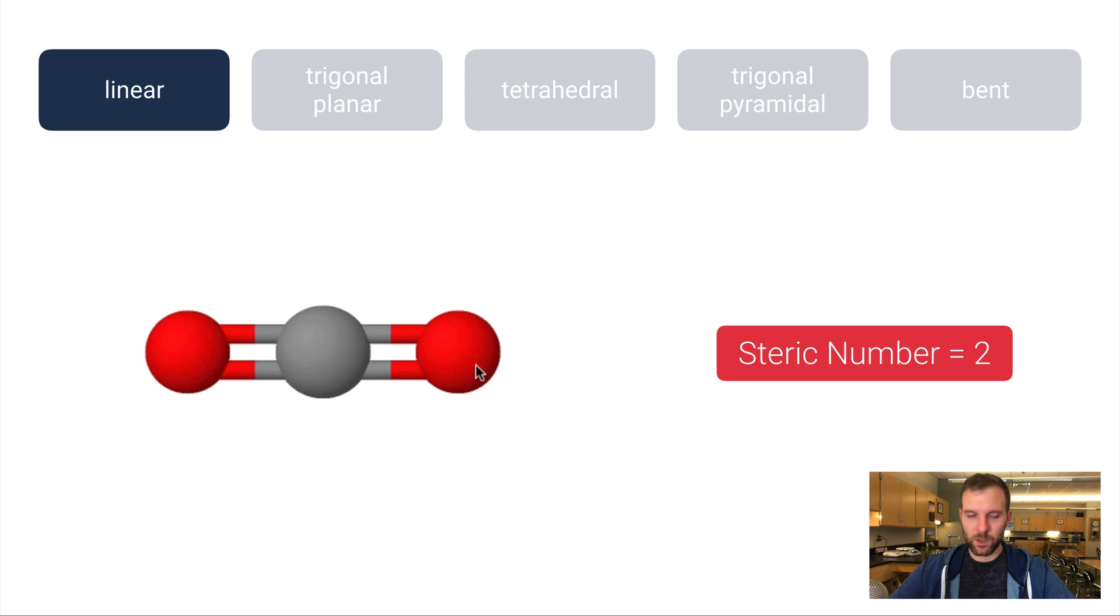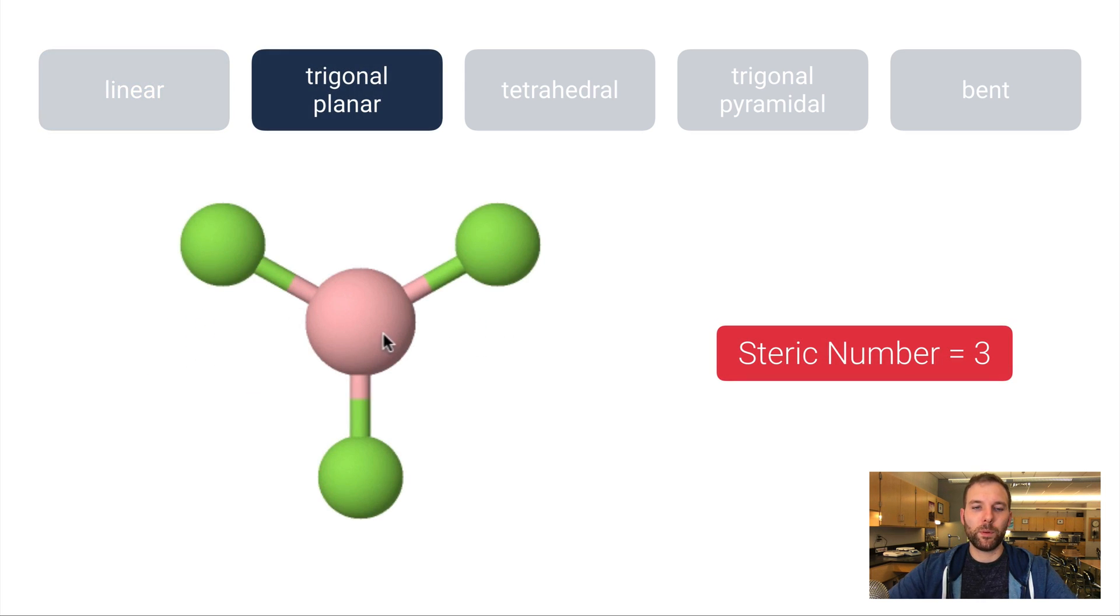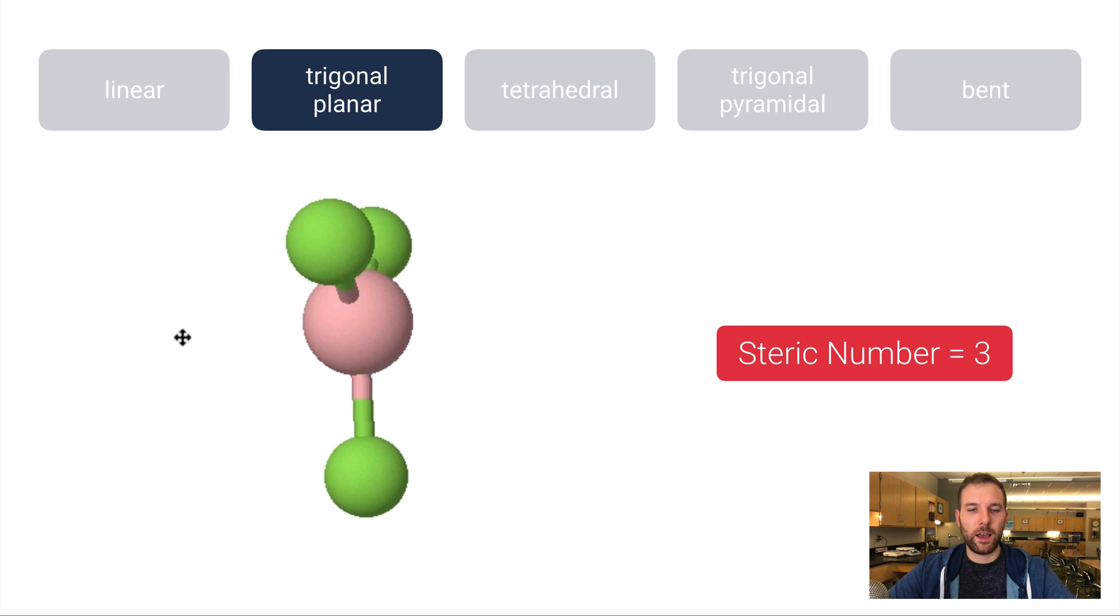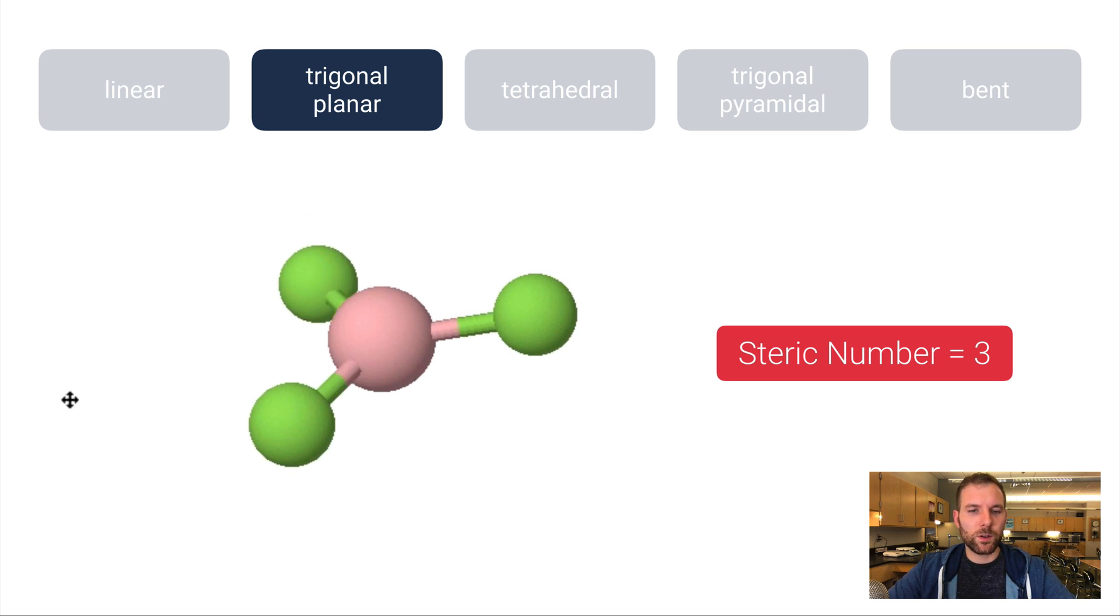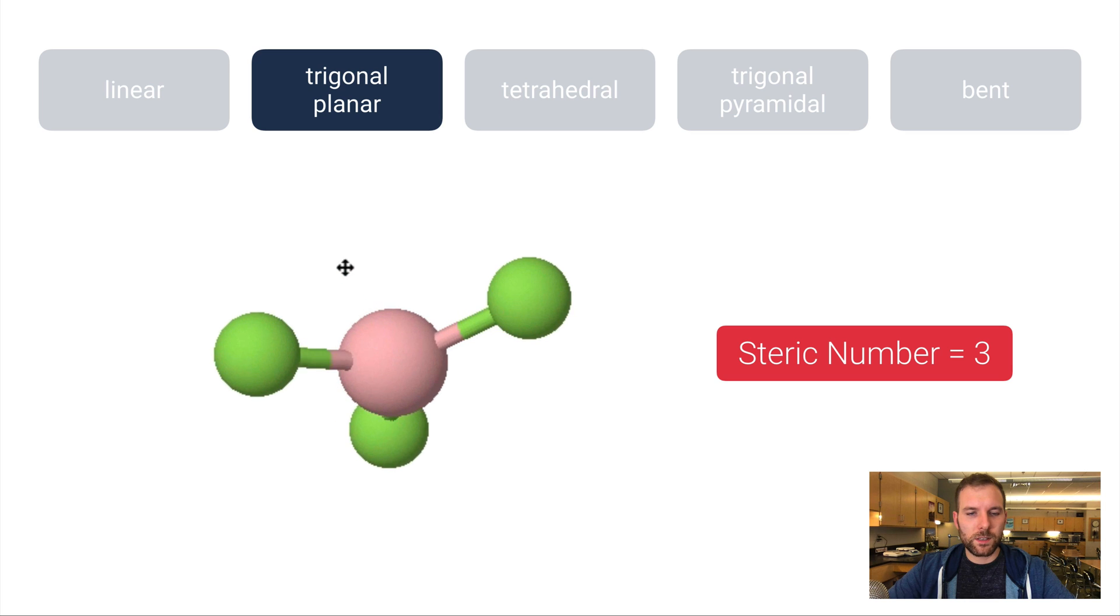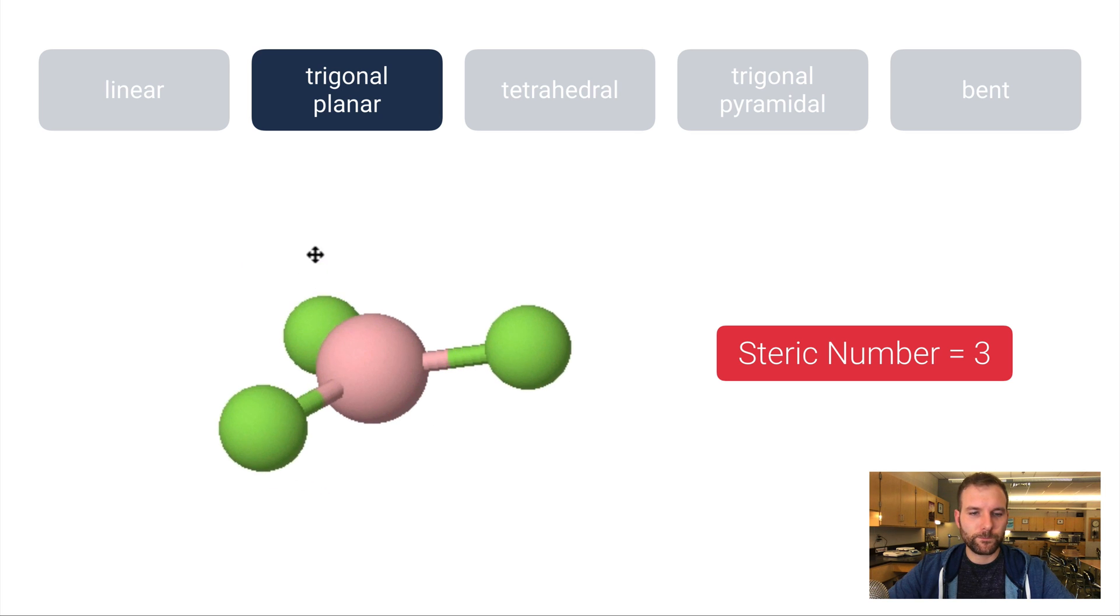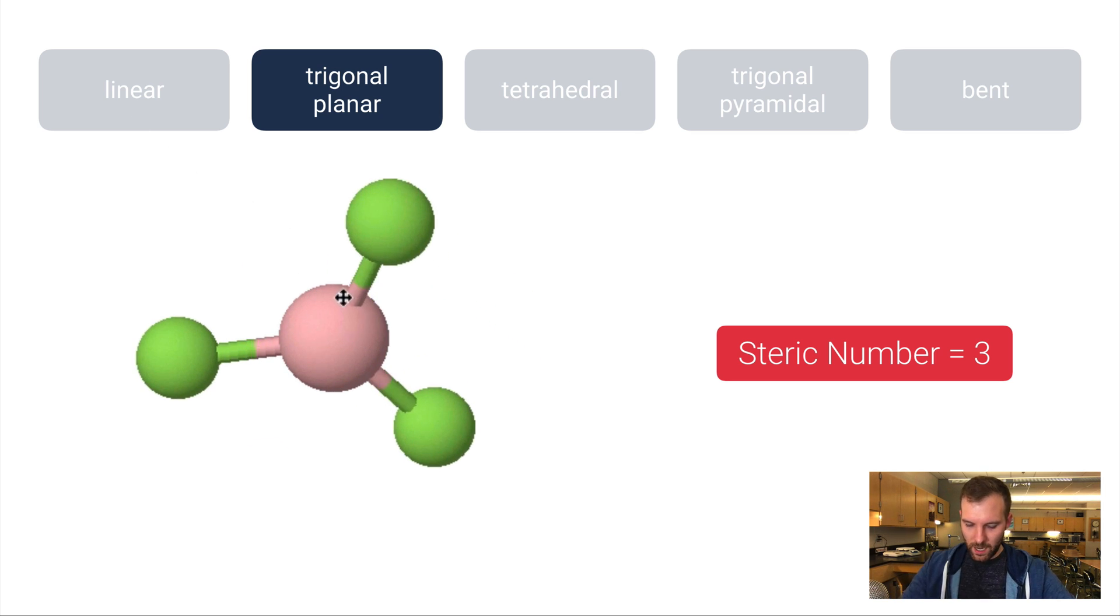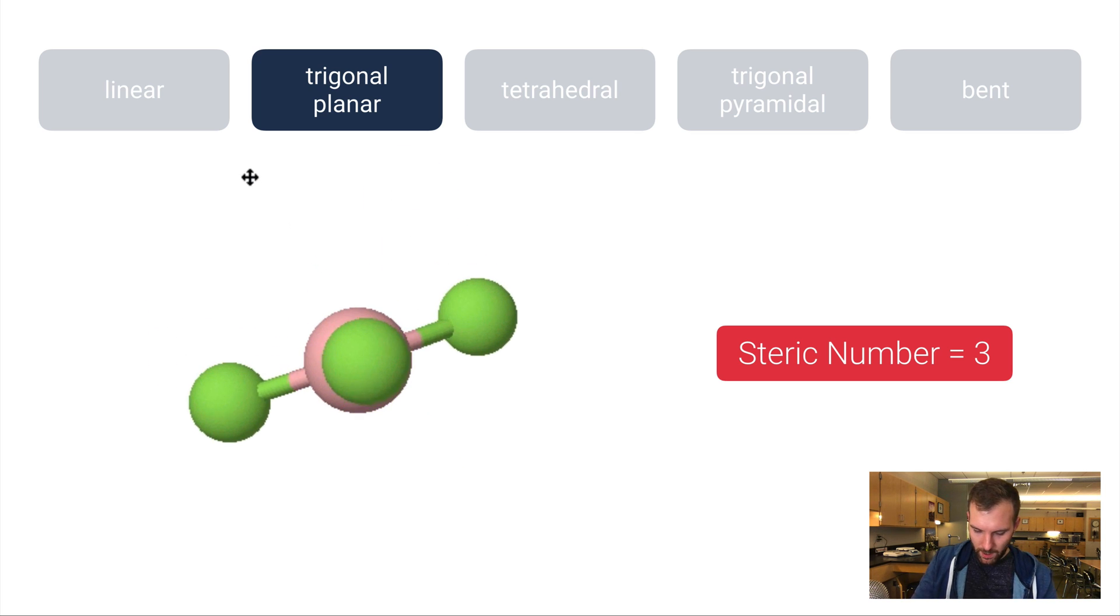And so the steric number then becomes two. Notice this is just a line, it's like a pen or a pencil or something. The bond angle here is 180 degrees and that's where it gets its name—linear. It's just a linear molecule. So CO2 is a good example of that. Let's move on to trigonal planar. Trigonal planar has one central atom and three atoms on the outside. Notice that these are at 120 degrees—that's the bond angle there, it's just in thirds. Steric number here is three. That means that there are three bonds around the central atom and no lone pairs.